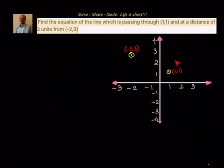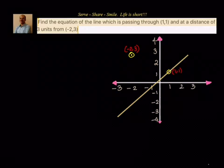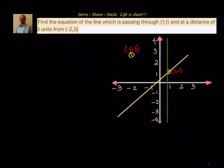What is our approach to solve this particular problem? Let's have a look at that. First let us draw this straight line. This is one straight line which will satisfy both the conditions — it is at a distance of 3 units from the point (-2,3) and also passes through (1,1). The other straight line will be the one passing through (1,1) and parallel to the y-axis.